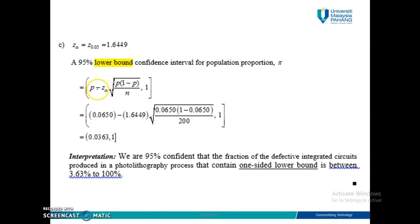This is a lower bound, so the left side should be minus. Until to the right you have 1, because this is proportion — your value should be between 0 and 1. Since you calculate the lower bound, the upper bound should be maximum equal to 1. Substitute the P value from the previous question and the Z value here, and calculate. You get 0.0363 until 1. You have two marks as well — you should know you calculate from where to where; in this case, from the lower bound to the right which is 1. The interpretation: we are 95% confident that the fraction of defective integrated circuits produced in the photolithography process with one-sided lower bound is between 3.63% and 100%.